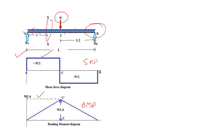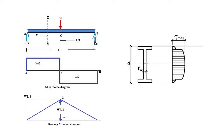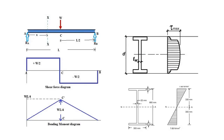In that I-section or wide flange section, if you consider how the shear force is distributed throughout the section, you can see that the majority of the stress due to shear force is carried by the web part. Now regarding the bending moment — if you consider any section of this beam, the stress distribution shows that the majority of the stress due to bending moment is carried by the flange part of the I-section.